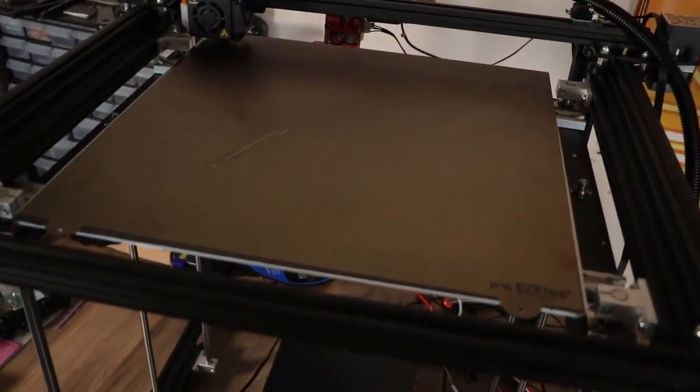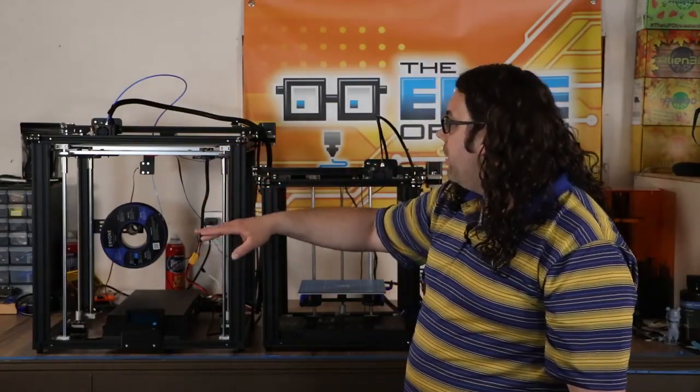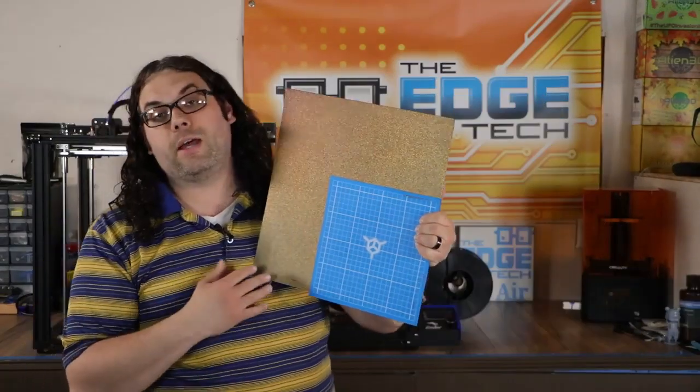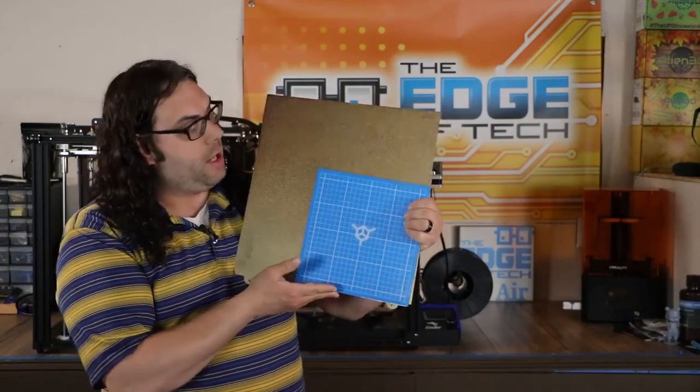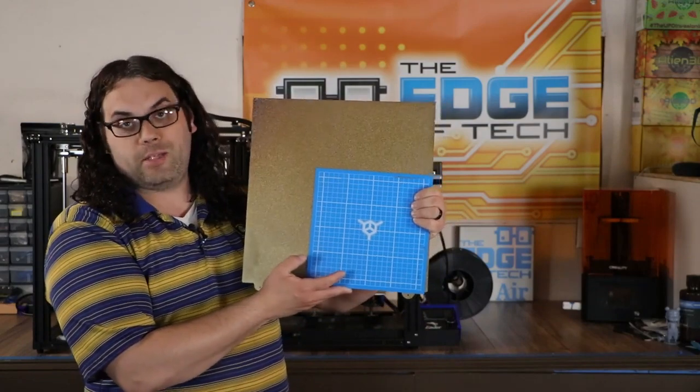So you get 100 more millimeters tall here and you get 130 more millimeters wide. To show you what that looks like, this is the difference in the build plates. This is the Ender 5 build plate, this is the Ender 5 Plus build plate.